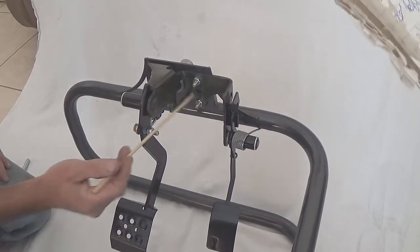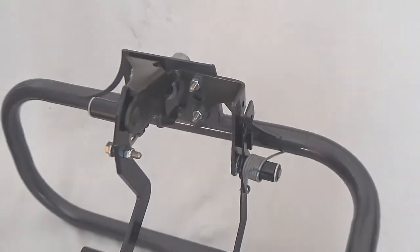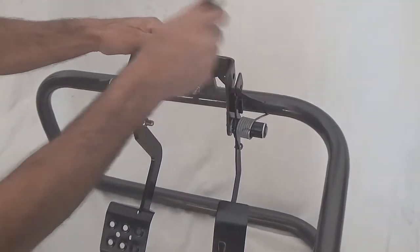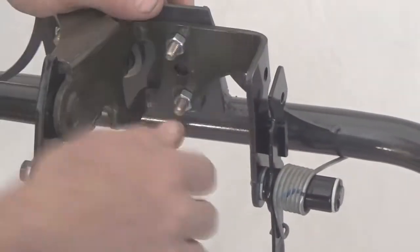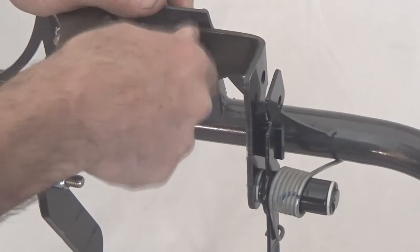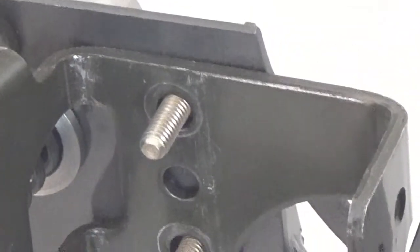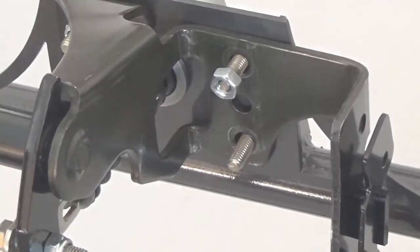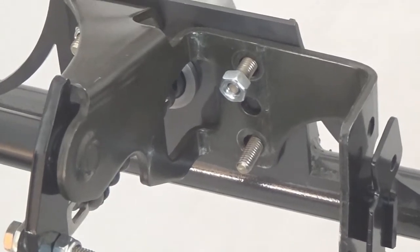Locate the two factory studs between the brake pedal and throttle pedal. Remove both nuts. The studs are pressed into the firewall and will stay in place. You're going to thread one of the supplied nuts onto that top stud. One or two turns is sufficient. Don't put it down all the way. You'll need to have it out for the proper installation.